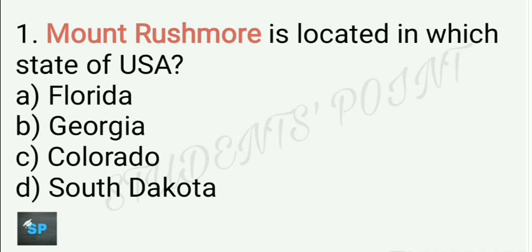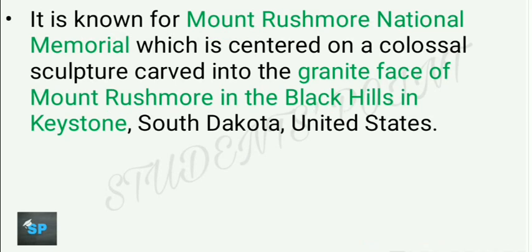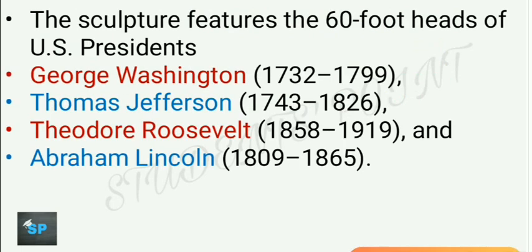Let's begin the first question now. Mount Rushmore is located in which state of United States of America? It is located in South Dakota, so D is the right answer. It is known for Mount Rushmore National Memorial, which is centered on a colossal sculpture carved into the granite face of Mount Rushmore in the Black Hills in Keystone, South Dakota. This sculpture features the 60-foot heads of four US presidents: George Washington, Thomas Jefferson, Theodore Roosevelt, and Abraham Lincoln.